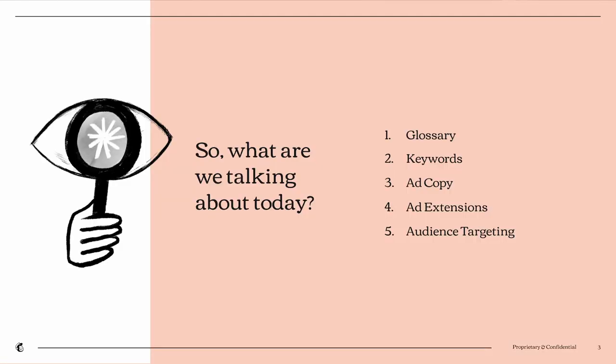So what are we talking about today? First, I'll go through a few glossary terms — certain columns I like to utilize when auditing paid search performance, so you understand those definitions. After that, I'll go through some keyword and ad copy recommendations on how to evaluate performance. Then we'll talk about ad extensions — ones you might be aware of and ones you might not. Finally, we'll talk about audience targeting and ways to overlay in-market and affinity audiences to optimize your paid search campaigns.